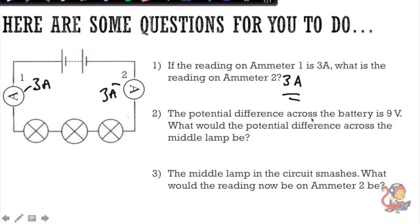Question two, the potential difference across the battery is 9 volts. So in your exam I recommend you write all over your circuit with the information that you've got. What would the potential difference across the middle lamp be? So if 9 volts is the potential difference across the battery, we remember that our rule for series circuits is that potential difference is shared between components. And because they're the same components we can assume that they've got the same resistance and that would mean that 9 volts would have to be shared three ways. So they would each have 3 volts of potential difference across each lamp. So the answer would be three volts.